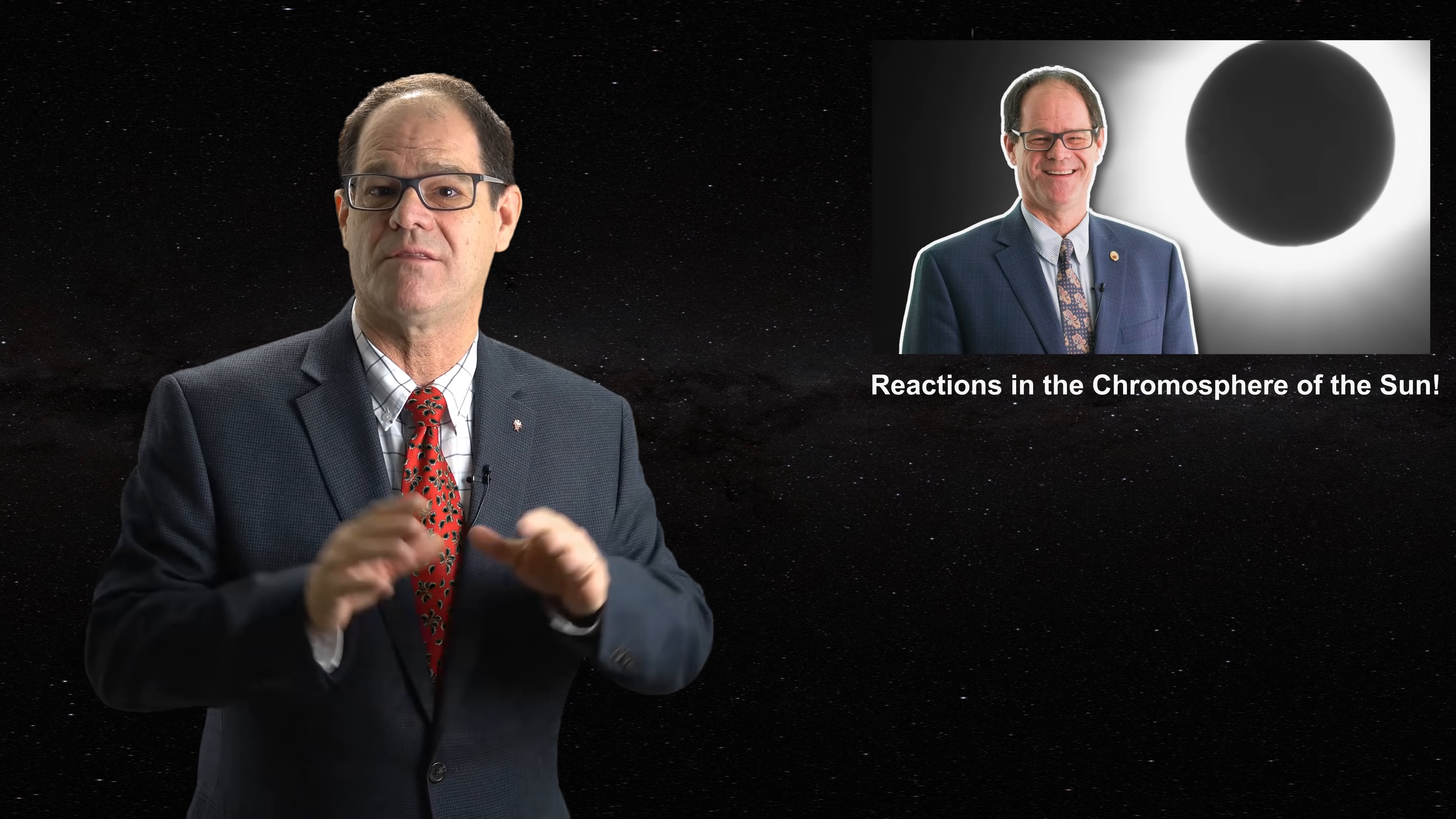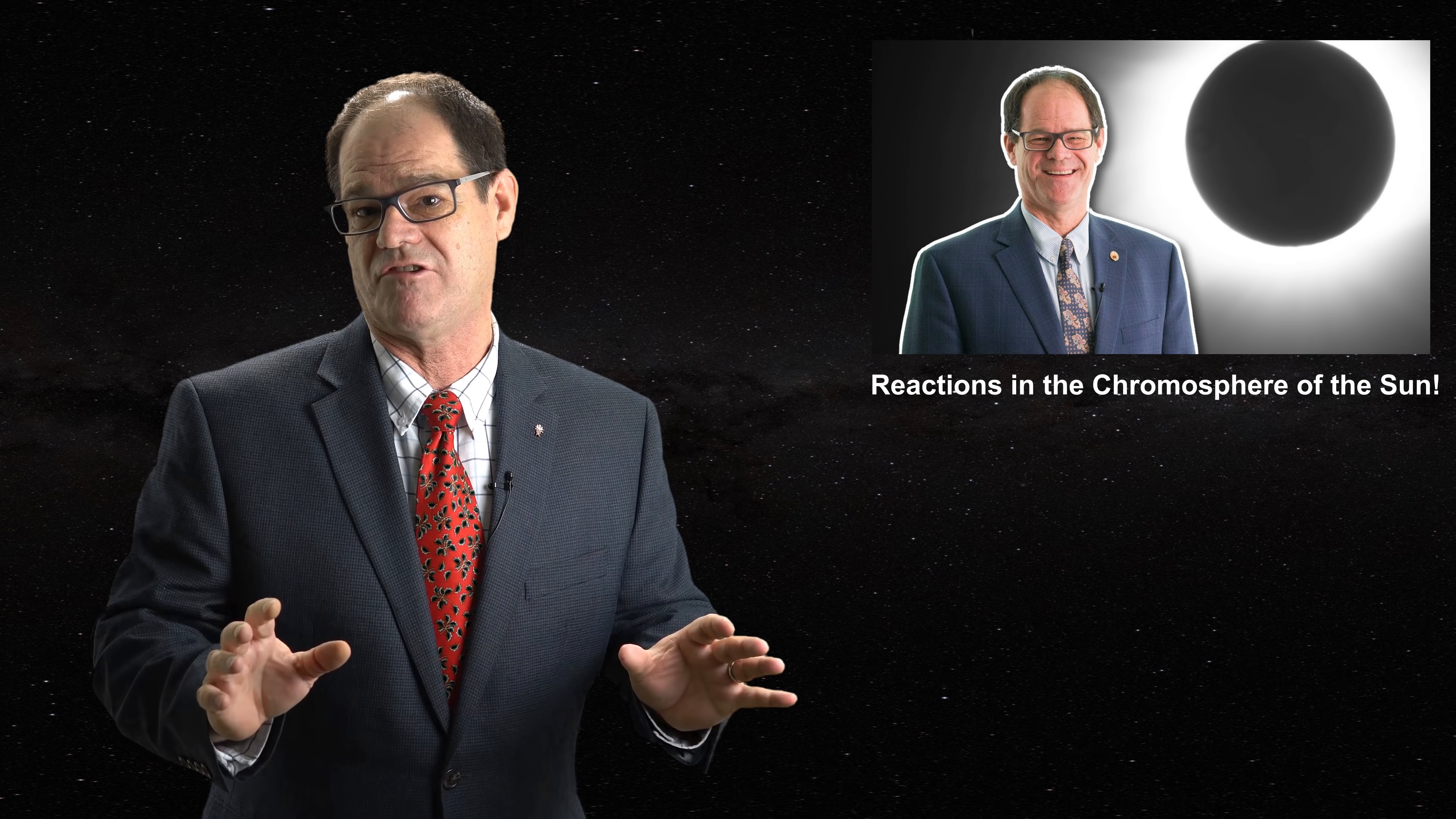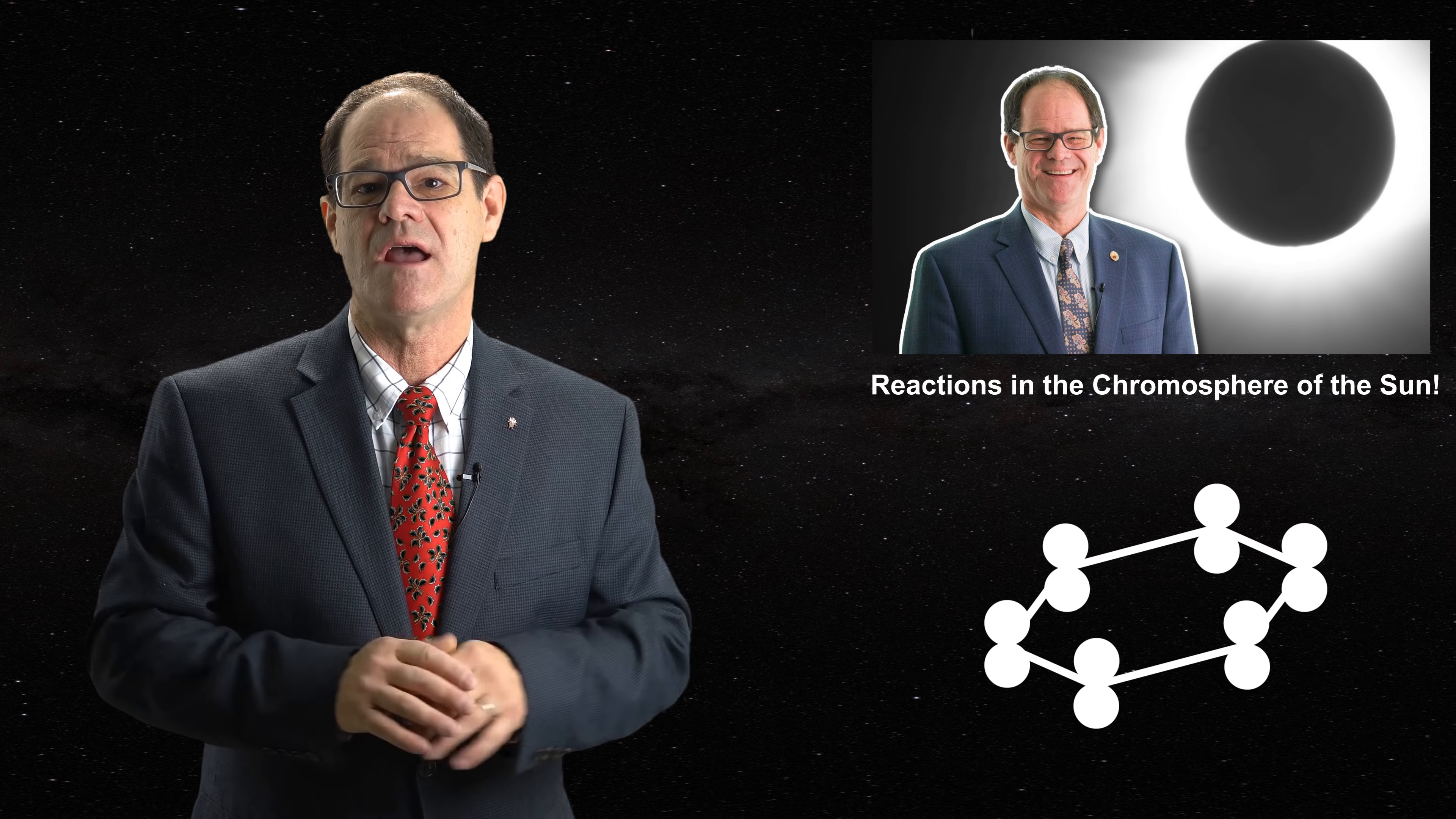Immediately above the photosphere is the chromosphere. I have argued in this video that this region possesses condensed matter in the form of dense hydrogen. The exact structure is not clear but might resemble this lattice structure. In the chromosphere we also find atoms molecules and ions.